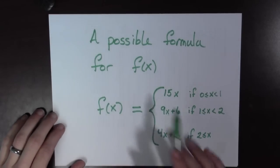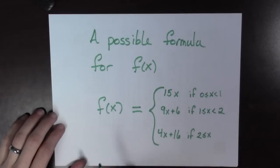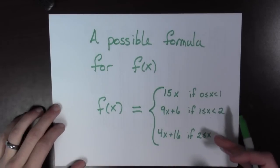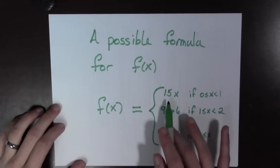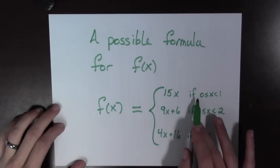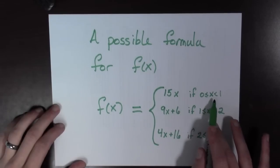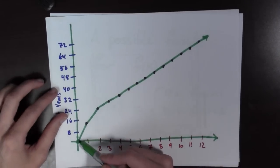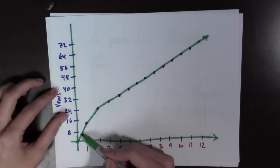So, here we have a possible formula for f of x. And this is a little bit strange. f of x is a piecewise function. So, f of x equals 15x if 0 is less than or equal to x is less than 1. And if we look at the plot, we can see this. Here it is. This is the 15x part right here.